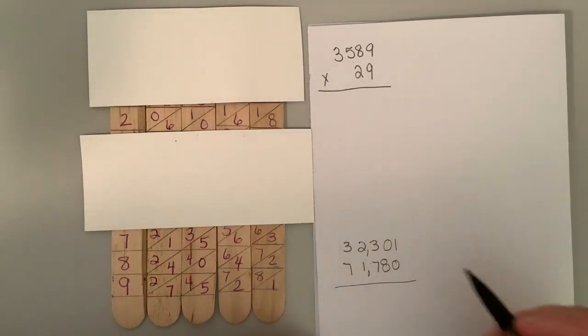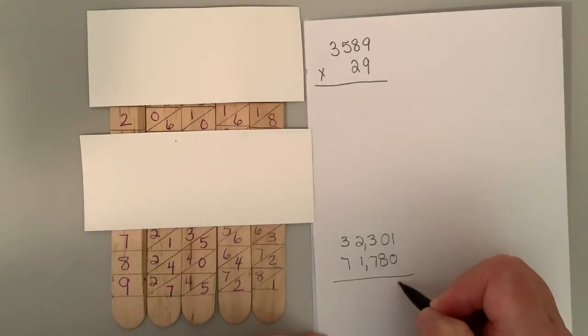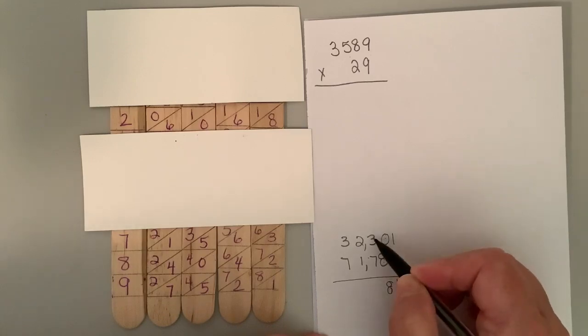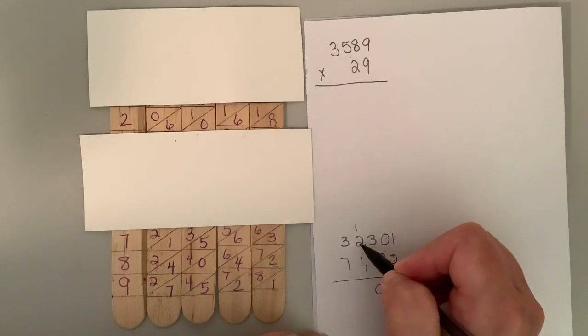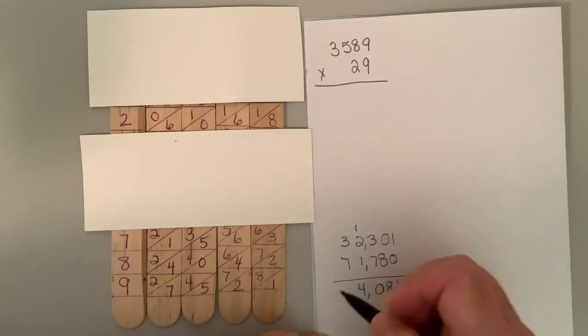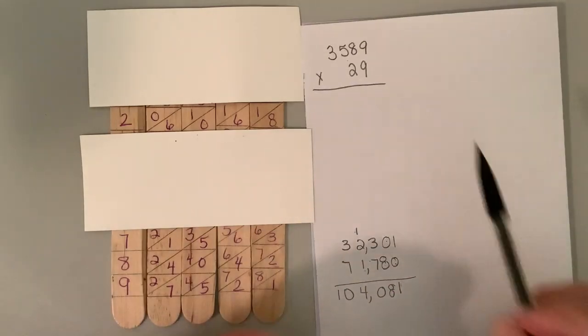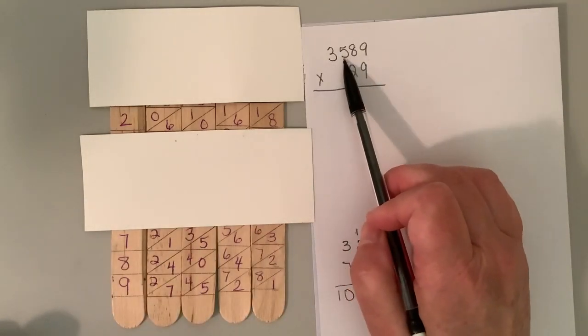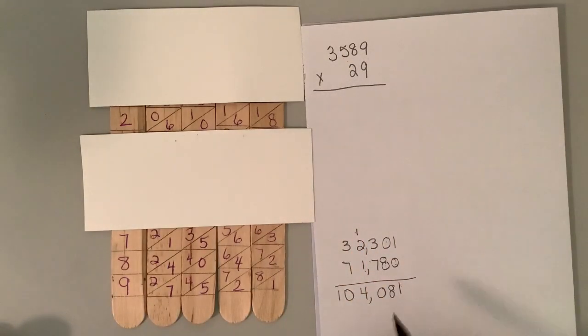And then I add them together. So, one plus zero is one, zero plus eight is eight, three plus seven is 10, carry the one, two, three, four, and this is 10. So 3589 times 29 is 104,081.